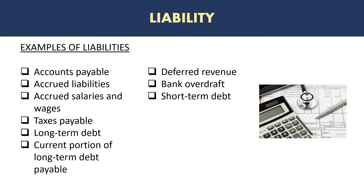Here are the majority of the examples you will see for liabilities. The first one is accounts payable, which is kind of the opposite of accounts receivable. These are amounts due to be paid by the company to its vendors or suppliers. If the vendor has offered credit to the company, the company purchased something and was allowed some time to pay — this is recorded as accounts payable for the period the amount is not settled.